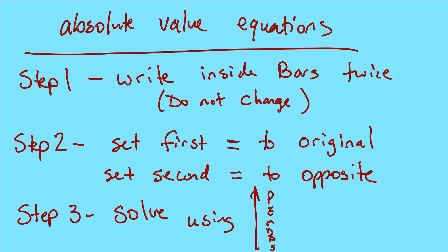To do the front side, there are equations. Step 1: you're going to write inside the bars twice. You're never going to change anything inside the bars. If you change something inside the bars, you made a big mistake.